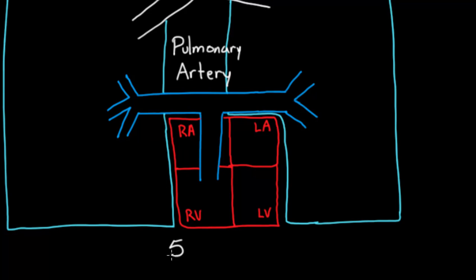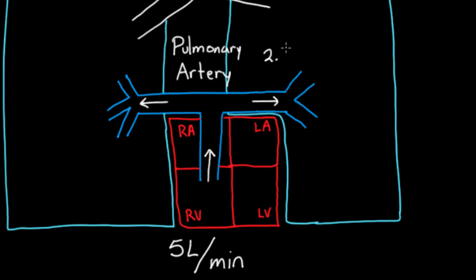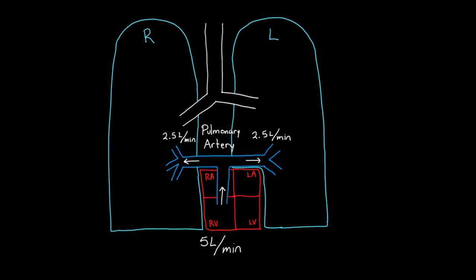The pulmonary artery goes to the left and right lungs. If we assume five liters of blood flow through the heart per minute, then five liters go through this vessel — some to the right lung, some to the left. If two and a half liters goes to the left lung per minute, then two and a half liters must go to the right, because whatever enters the tube has to come out the other end. This is the concept of flow: volume over a period of time, in this case liters per minute.